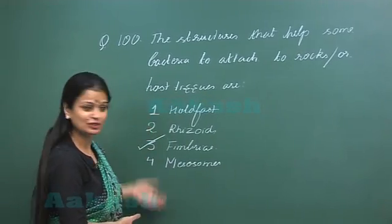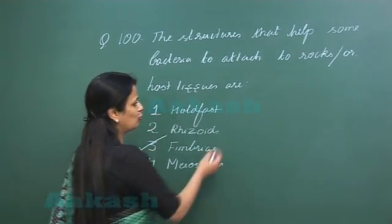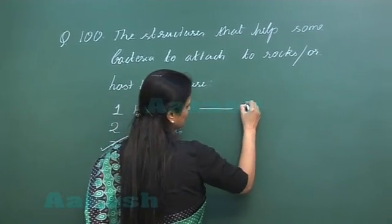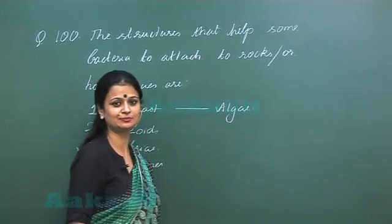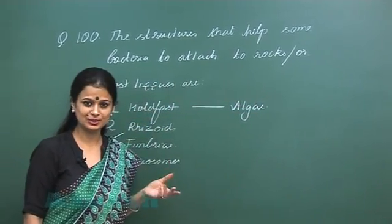Now if we look at the rest of the options, holdfast - this structure is present in algae for the attachment to the substratum like Ulothrix.